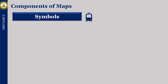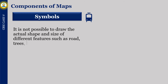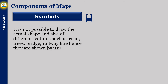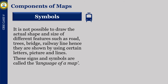It is not possible to draw the actual shape and size of different features such as roads, trees, bridges and railway lines, so they are shown using certain letters, pictures and lines. These signs and symbols are called the language of a map.